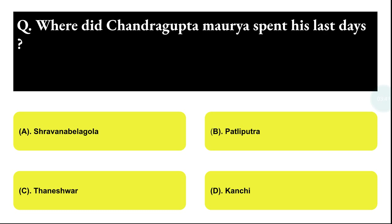Next question: where did Chandragupta Maurya spend his last days? Option A: Shravanabelagola, Option B: Pataliputra, Option C: Dhanishwar, Option D: Kanshi. The correct answer is option A, that is Shravanabelagola.